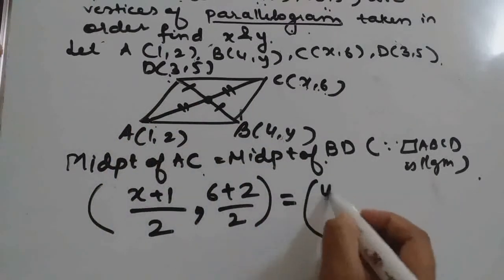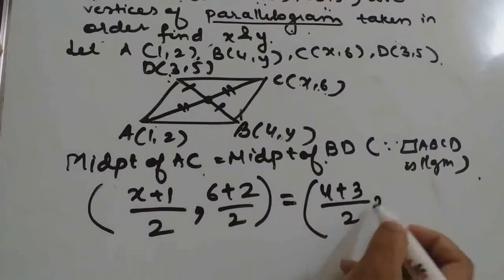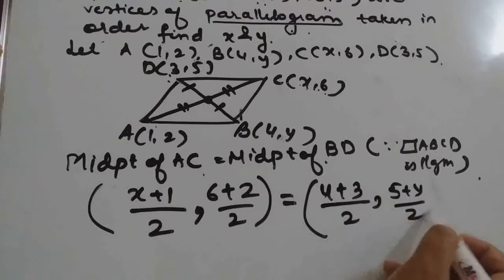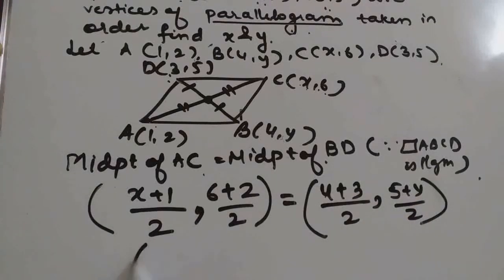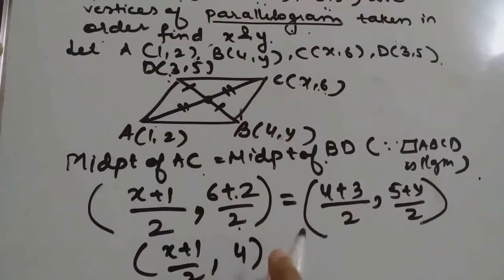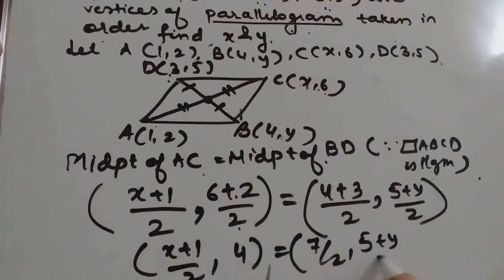So, (4 + 3) divided by 2, and (5 + y) divided by 2. So this will give (x + 1)/2, 8/2 means 4, and this will be equal to 7/2 and (5 + y)/2.